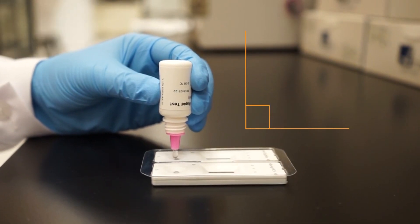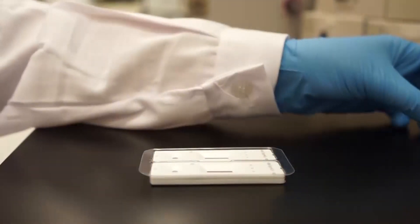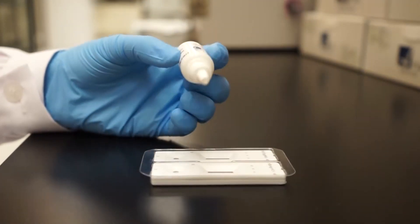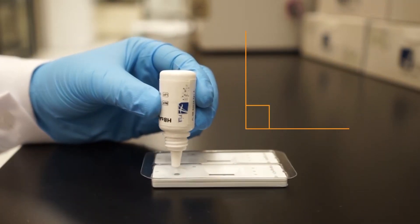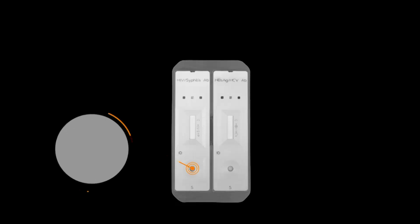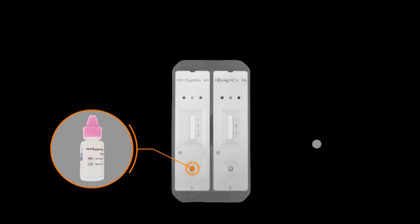Immediately add one drop of sample diluent into the center of each sample well with the bottle positioned vertically. The pink cap sample diluent is for the HIV syphilis cassette. The white cap sample diluent is for the HBV HCV cassette. Do not switch the sample diluents.